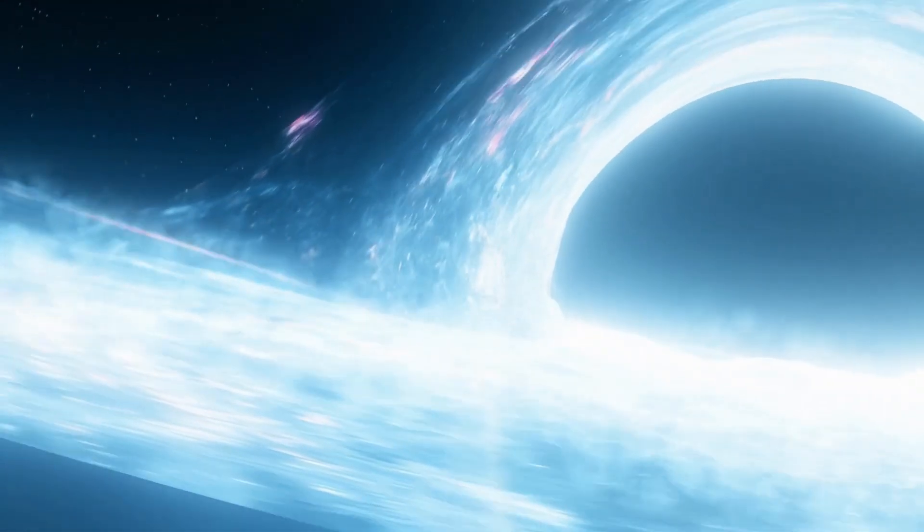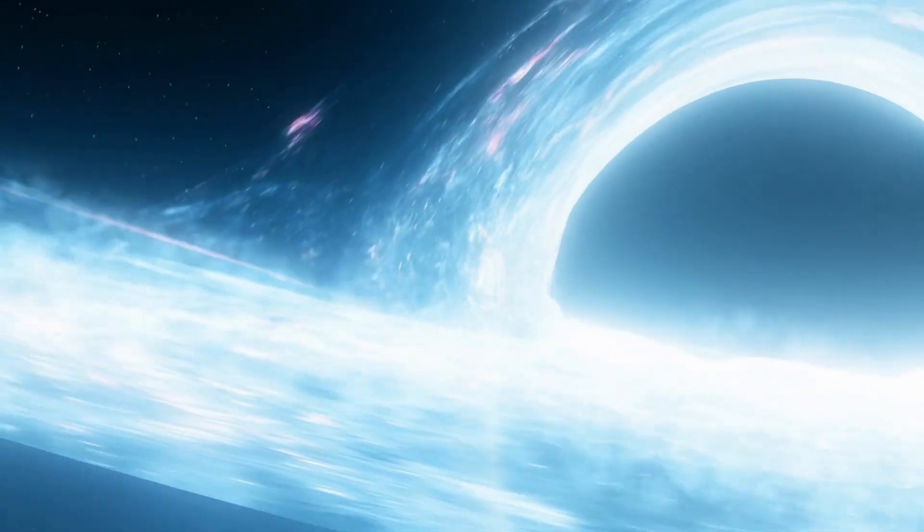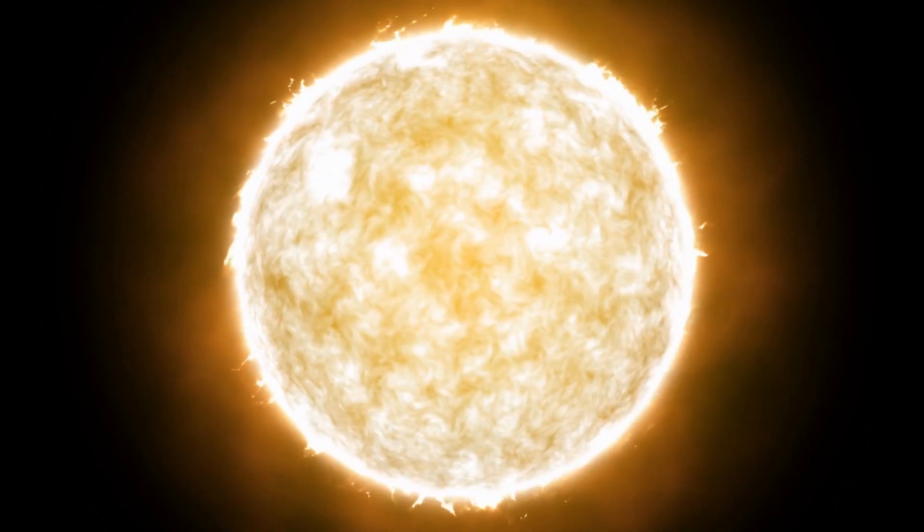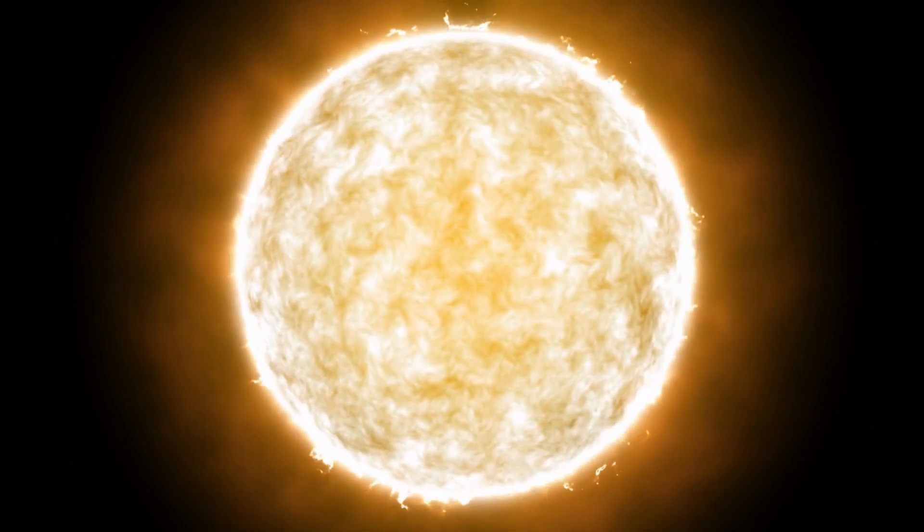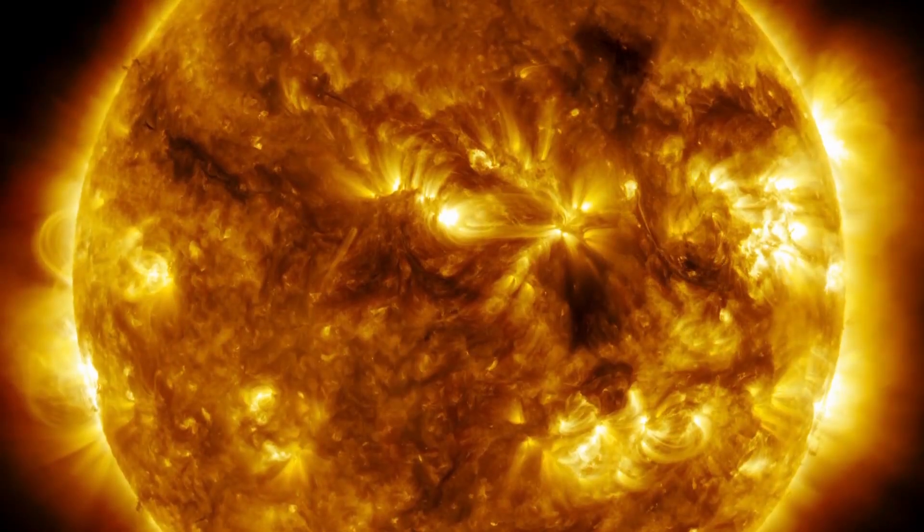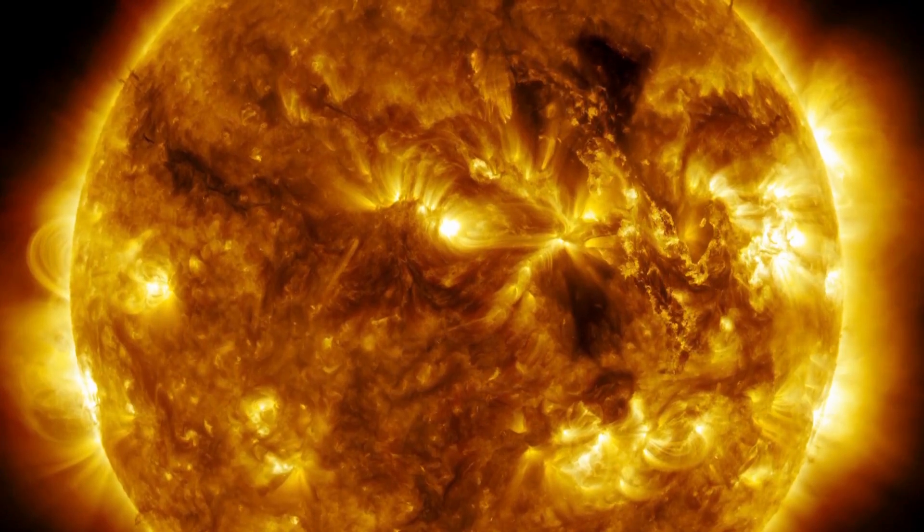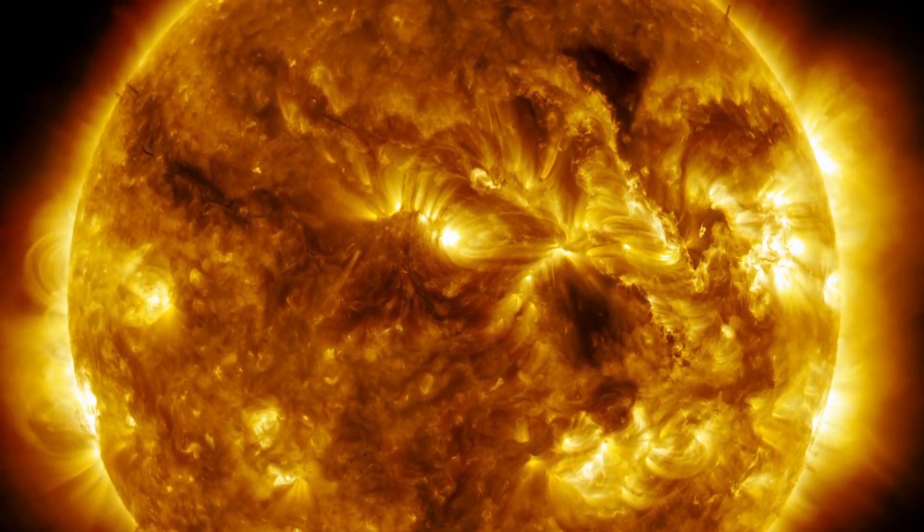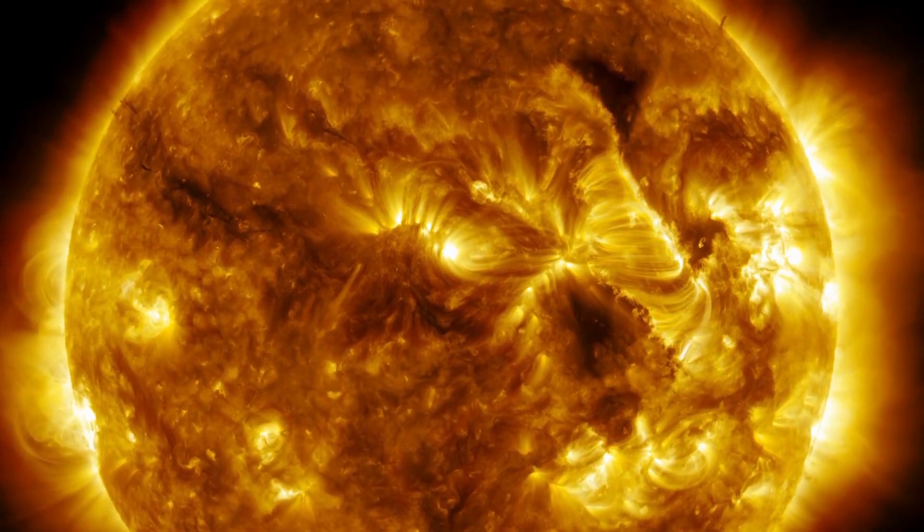To understand how black holes formed and what happens inside them, it is necessary to go back to the life cycle of a massive star. These massive stars are true cosmic powerhouses fueled by the incredible nuclear fusion reactions that take place in their cores. The sun's energy source comes from the fusion of hydrogen into helium. During this process, two hydrogen atoms combine in a collision and form a helium atom. As long as the star has enough hydrogen to carry out the fusion, it can maintain its brightness.